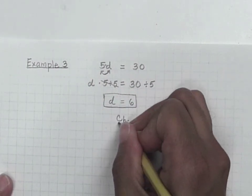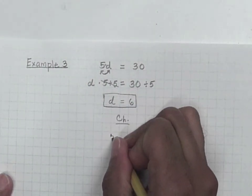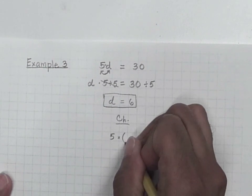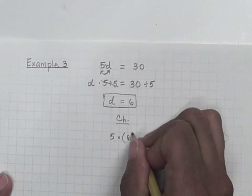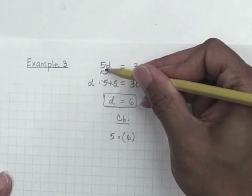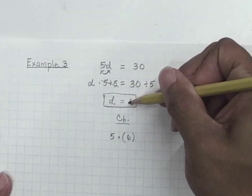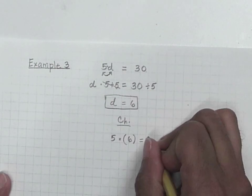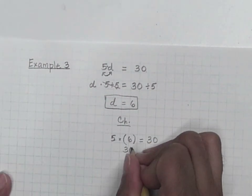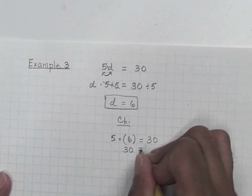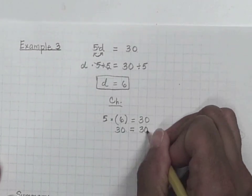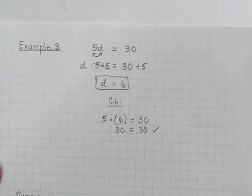We think our solution is d equals 6, but let's check to see that it actually is. We substitute back into the original equation: 5 times 6 equals 30. What's 5 times 6? 30. And the right side is 30. Does 30 have the same value as 30? Yes — therefore, d does equal 6.